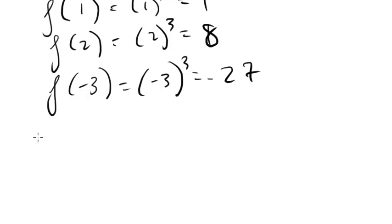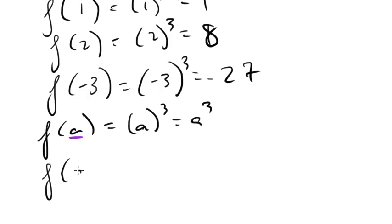How about f of a? Well, f of a, that's just going to be, again, follow the pattern. Wherever there is an x, we're going to replace it with an a in our equation. So it's just going to be a cubed. What about f of a minus 2? Again, wherever you see an x, replace it with an a minus 2. So this would just be a minus 2 cubed, and then we would expand this out even further. So you get the idea here.